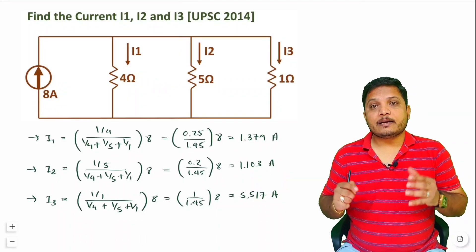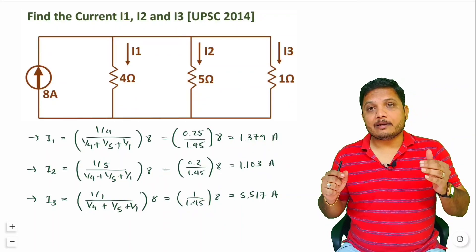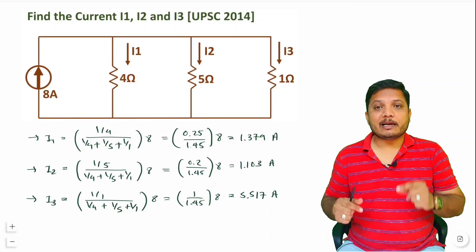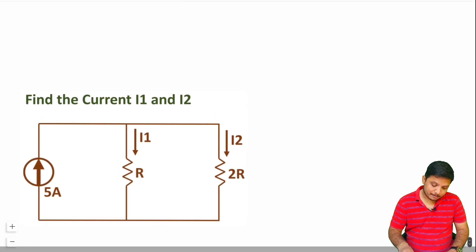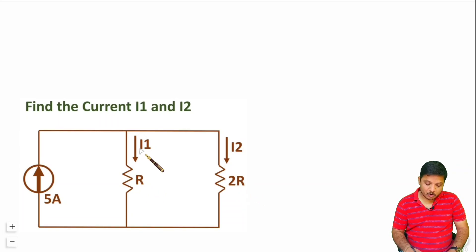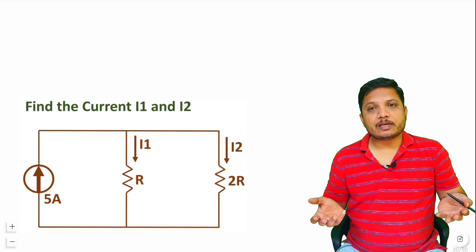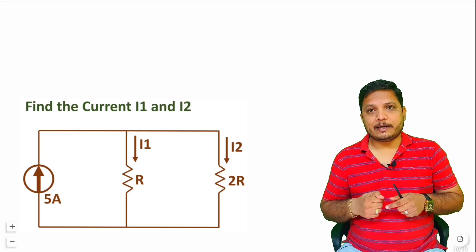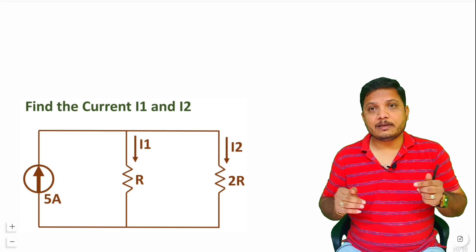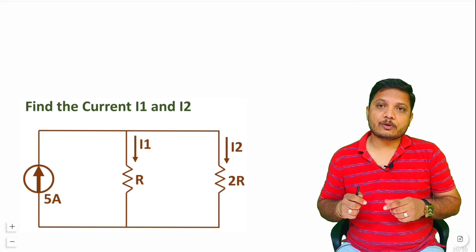Now, dear students, let me give you one practice question — write your answer in the comment box and if you have any query I will get back to you. In this question, we have a current source of 5 amperes with two resistors R and 2R in parallel. Using the Current Divider Rule, find I1 and I2. I hope you have understood this. Thank you so much for watching this video.